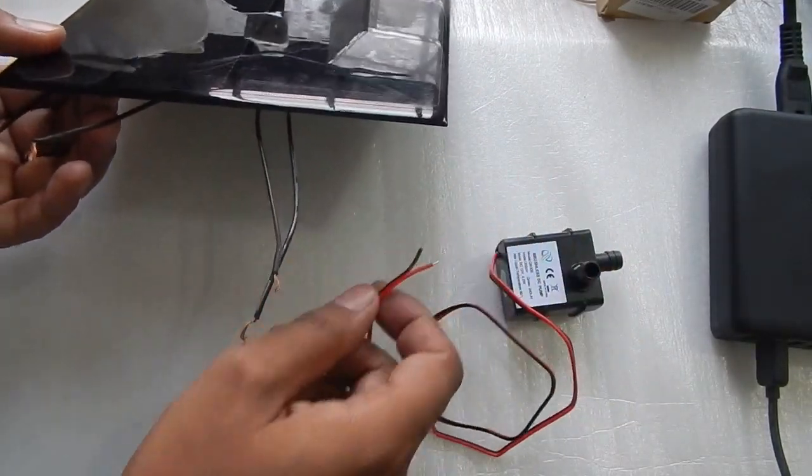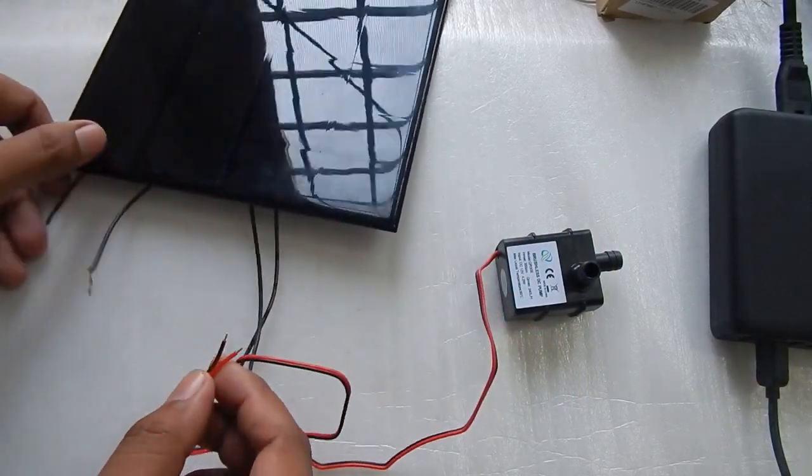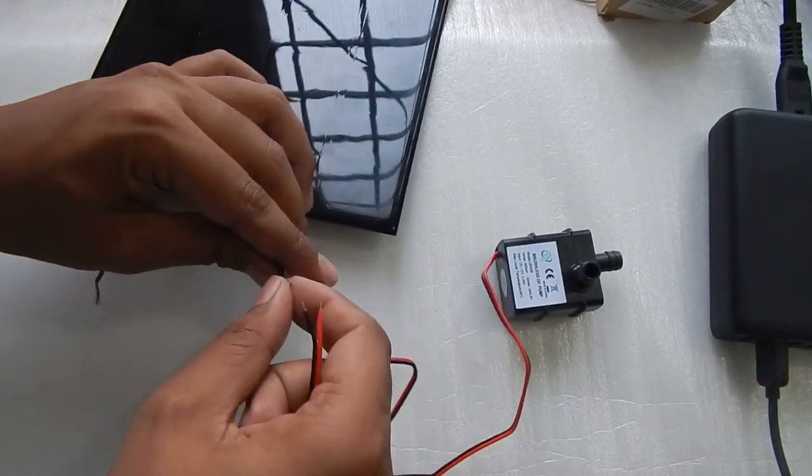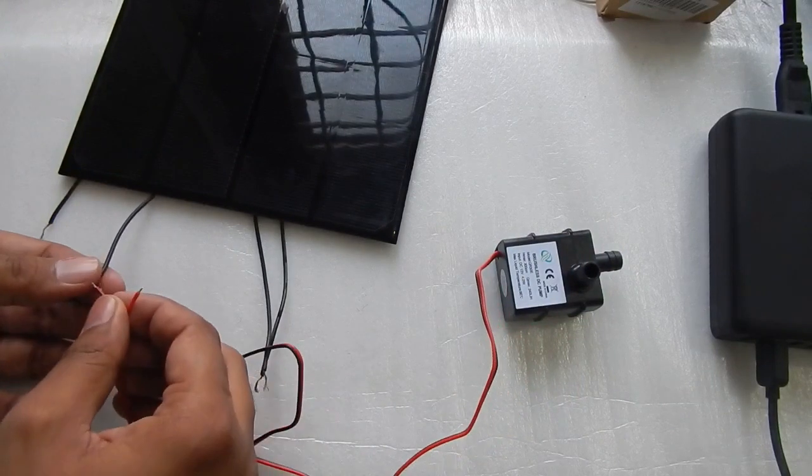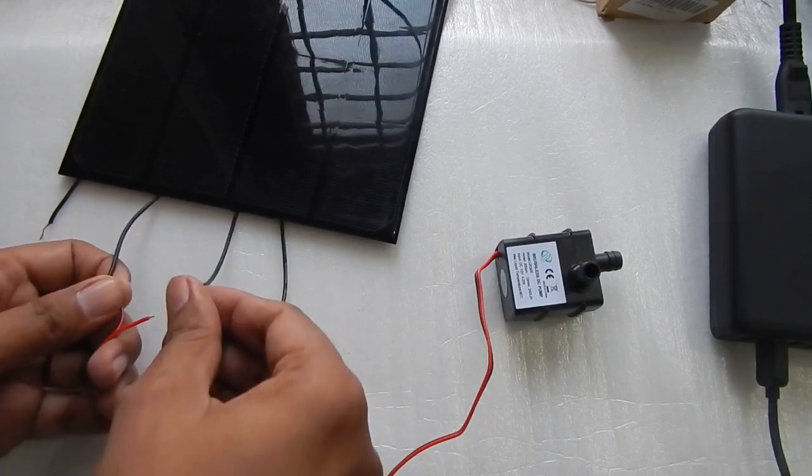So let's just see in this amount of lighting whether the pump is able to run or not. So I'm going to connect the positive to the red. Both these wire correspond to the positive and let me just connect the black to the black and positive to the positive.